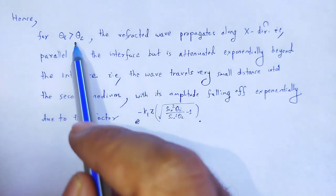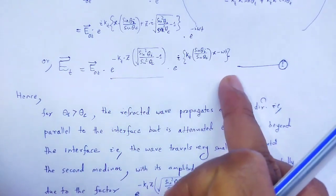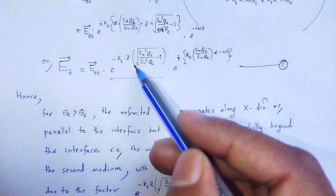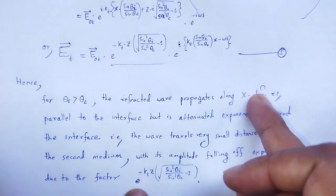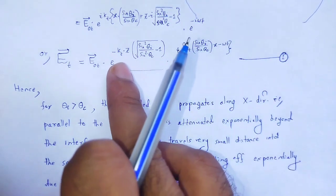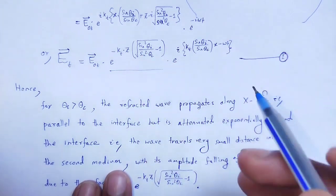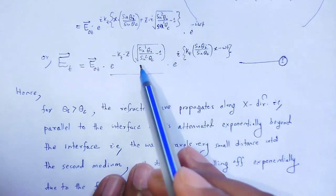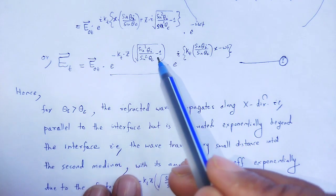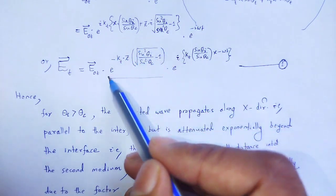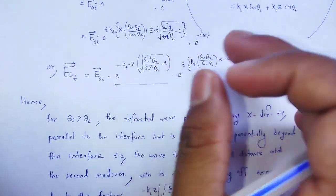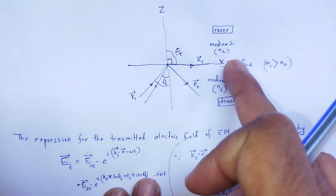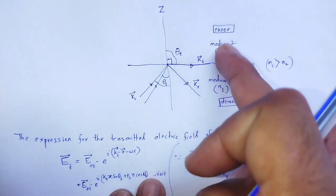For θ_i greater than θ_c, looking at the equation, the x component shows the refracted wave propagates along the x direction parallel to the interface, but in the z component it is attenuated exponentially beyond the interface. The wave travels a very small distance into the second medium with its amplitude falling off exponentially. Increasing the angle of incidence, the wave propagates parallel to the x axis but there will be some field in medium 2.